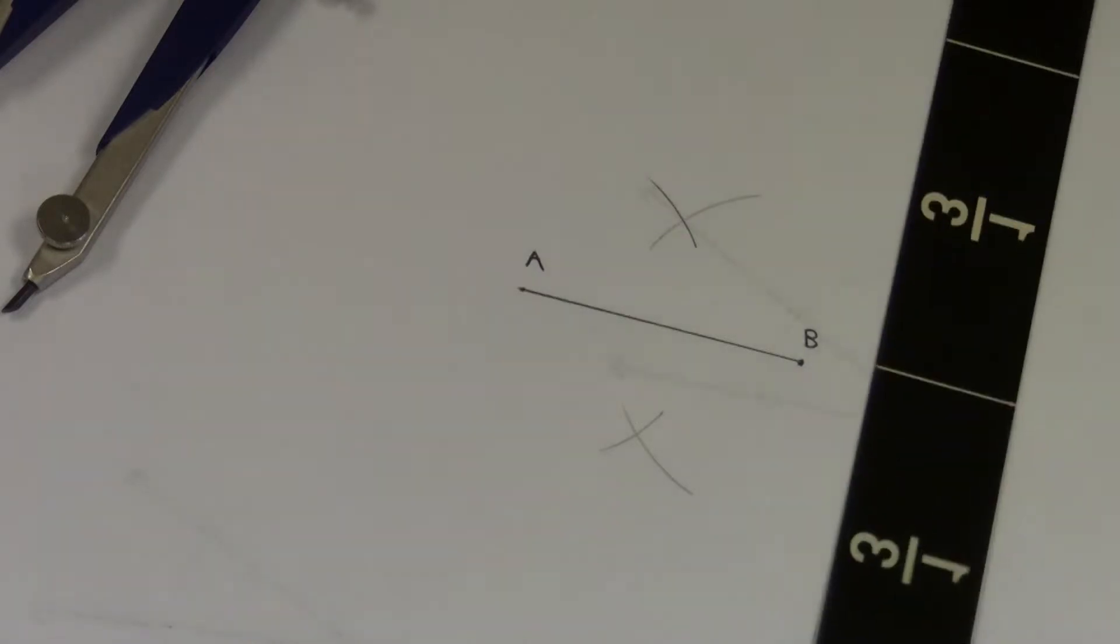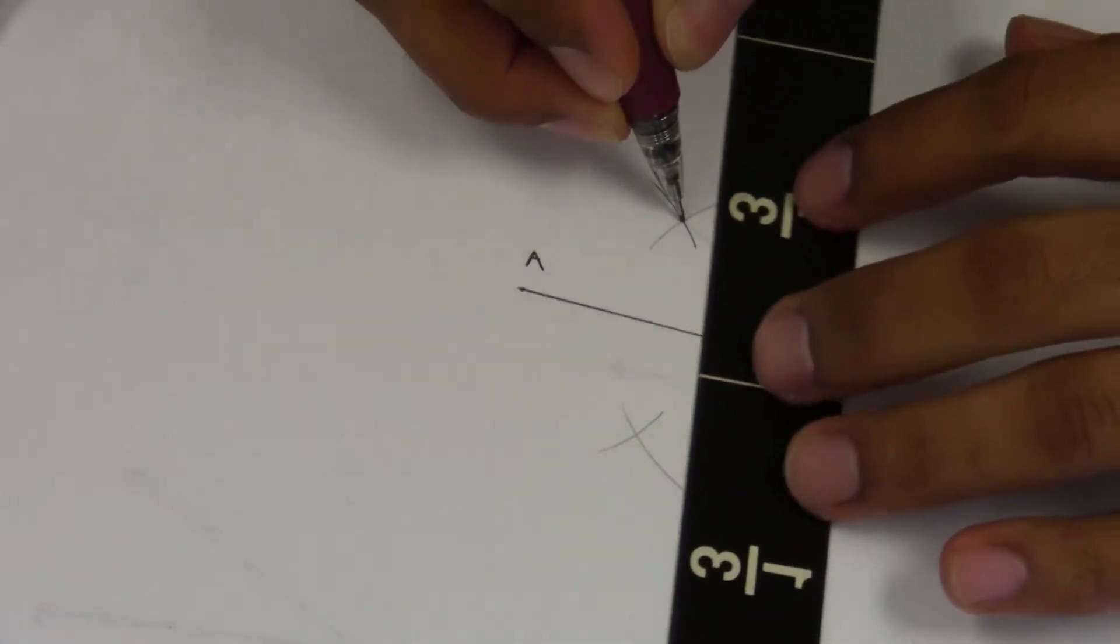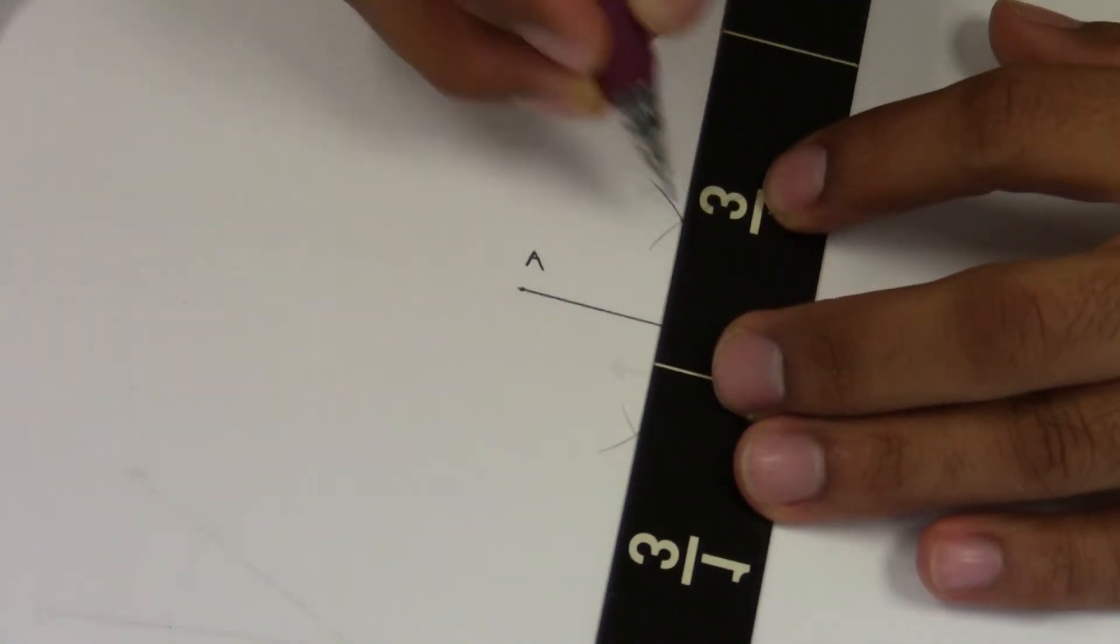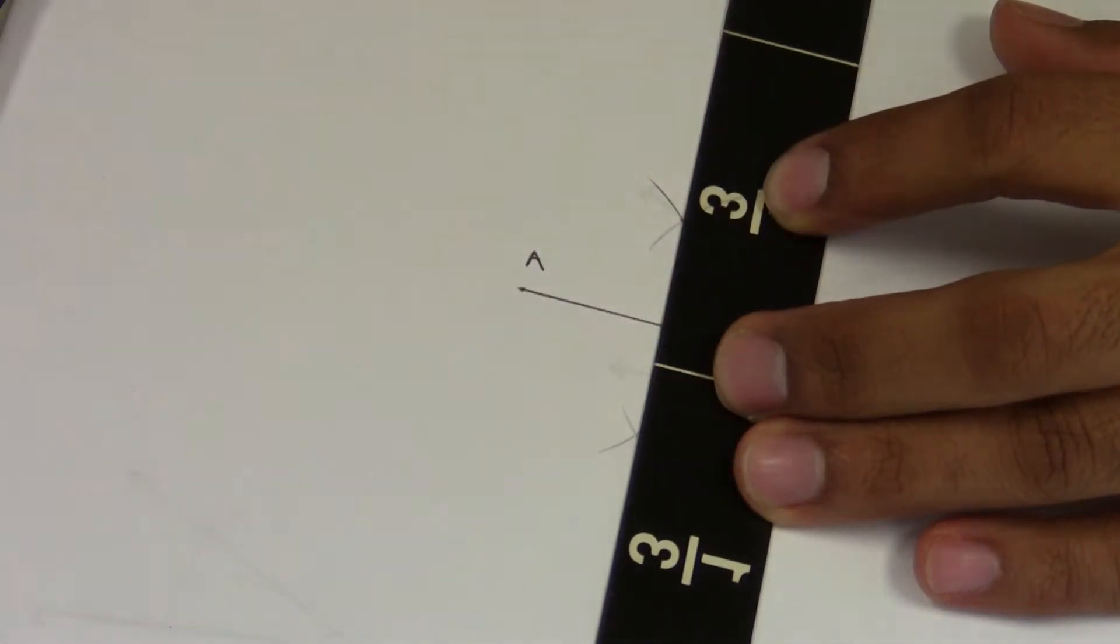Since I'm just looking for a midpoint, I'm going to use my straightedge. I'm going to line up where it intersected.